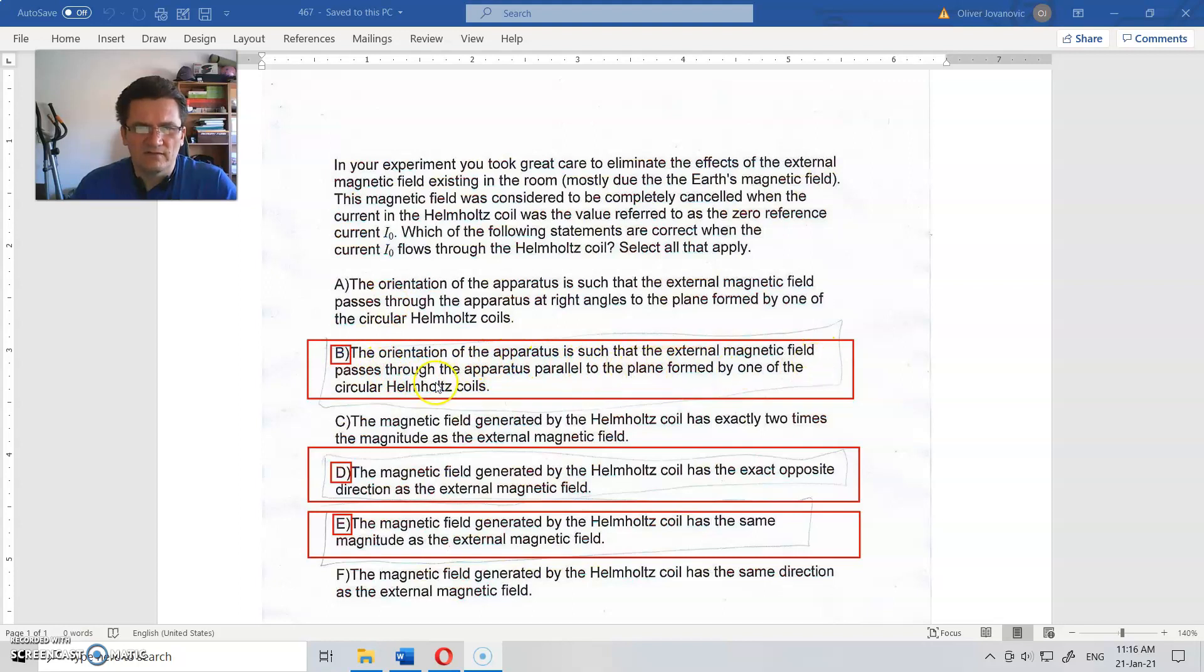passes through the apparatus parallel to the plane for one of the circular Helmholtz coils. The magnetic field generated by the Helmholtz coil has the exact opposite direction of the external magnetic field.